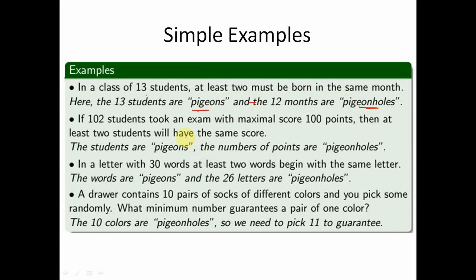Another example: if 102 students took an exam with a maximum score of 100 points, then at least two students will have the same score. Here 102 students are the pigeons and the 101 possible scores (0 to 100) are the pigeon holes — the number of pigeons exceeds the number of pigeon holes, so at least two students share a score.